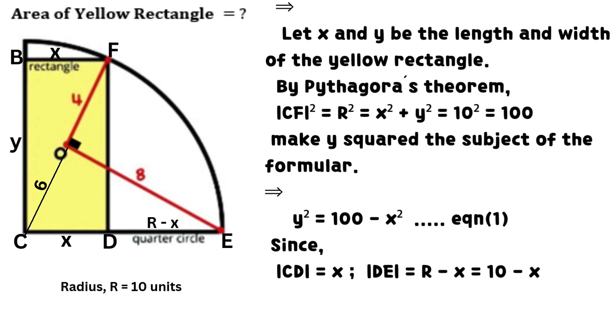Since line CD equals X and line DE equals R minus X, which equals 10 minus X.